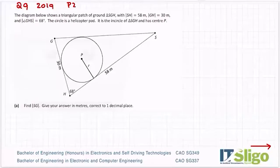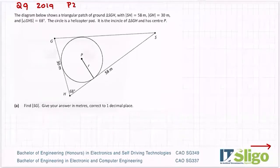2019 question nine — a long question on trig in paper two. The diagram shows a triangular patch of ground, triangle SGH, with SH equal to 58, GH equal to 30, and the angle GHS equal to 68 degrees. The circle is a helicopter pad — it is the incircle of triangle SGH with centre P. An incircle sits right inside the triangle.